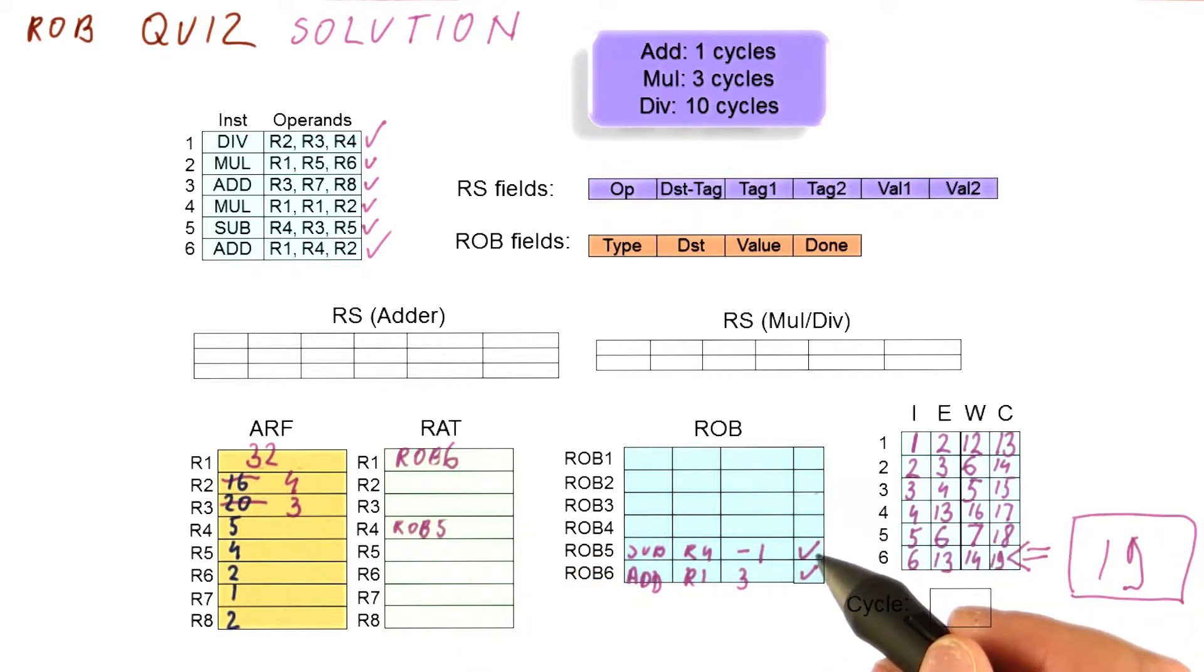In cycle 18, we can commit this, we put minus 1 in R4. We check the entry for R4, is it pointing to ROB5? It is. We change the rat to point to this R4 and we free the ROB entry.